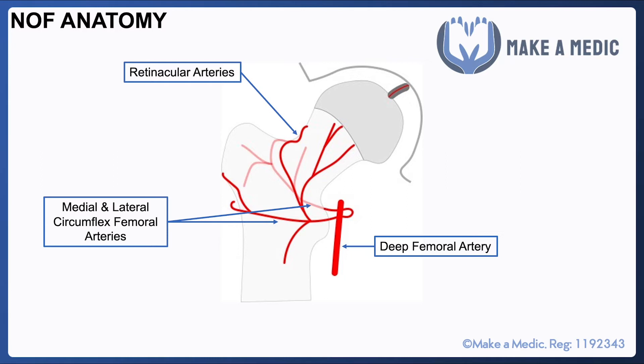The key point to recognize about this arrangement is that the blood supply is a retrograde blood supply, in the sense that it comes from distal to proximal, unlike most other blood supplies in the body. There is also a relatively small amount of blood that goes through the artery of the ligamentum teres, but that's actually quite a minor component of the perfusion of the head and neck of the femur.